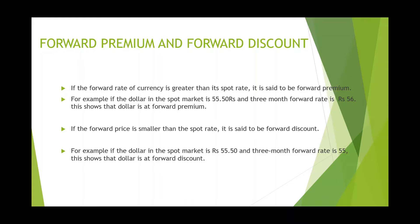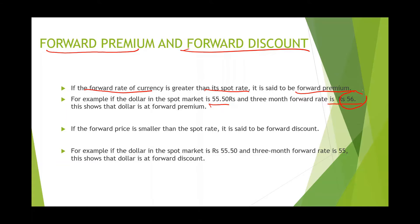If the forward rate of a currency is greater than the spot rate, it is said to be a forward premium. For example, if the dollar price in the spot market is 55 rupees 50 paisa — meaning if you purchase today it is 55 rupees 50 paisa — but if you purchase after three months it is 56 rupees, that means you need to pay an additional 50 paisa if you purchase after three months. This is what forward premium is.